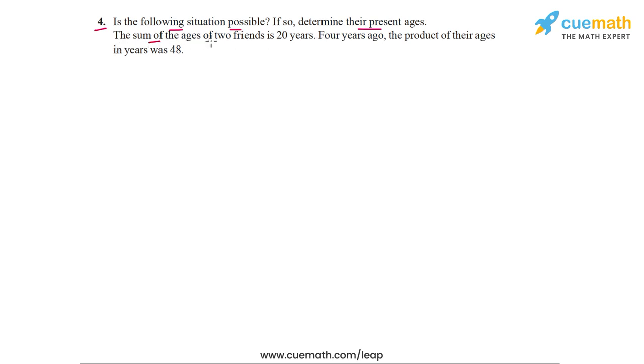The sum of the ages of two friends is 20 years. Four years ago, the product of their ages in years was 48. So this is the situation that's given to us and we have to find out whether this situation is possible or not. And if it is possible, we have to find the present ages of the two friends.